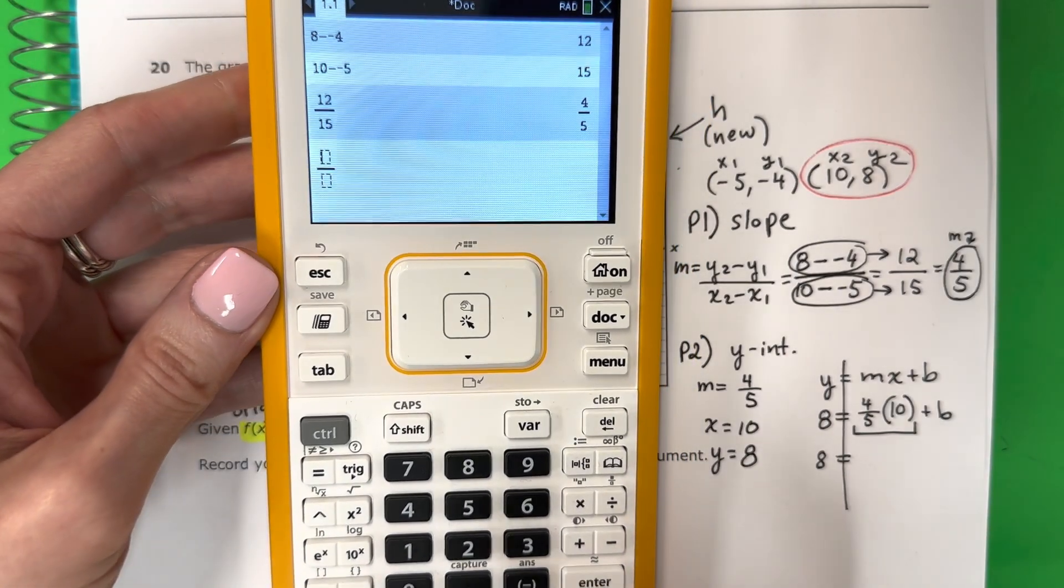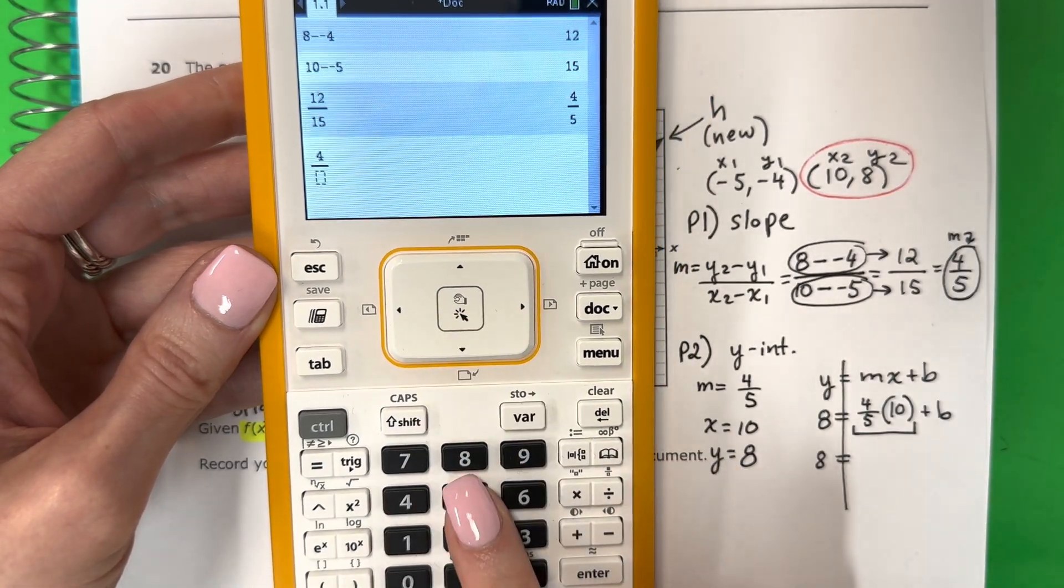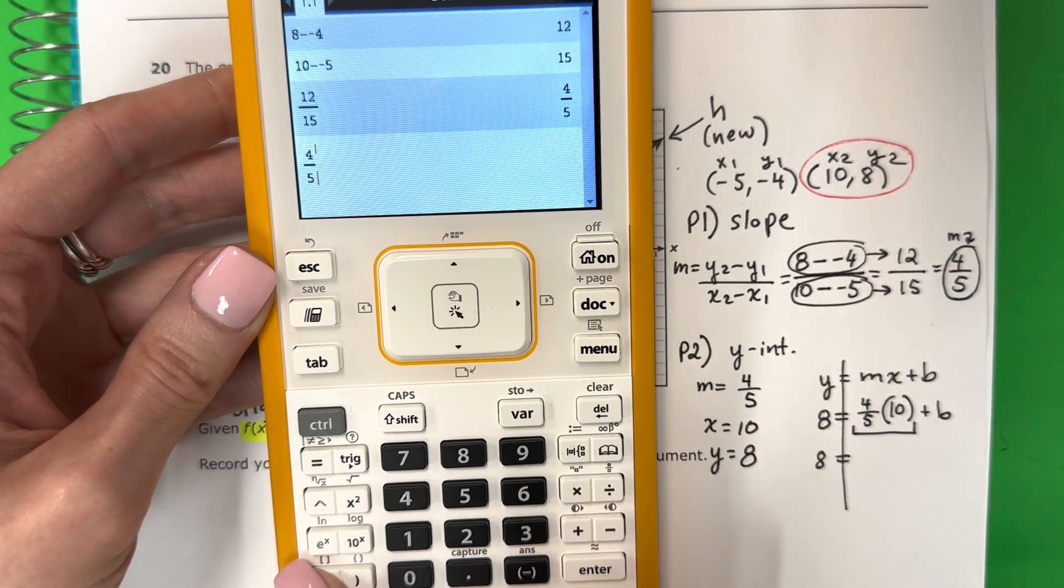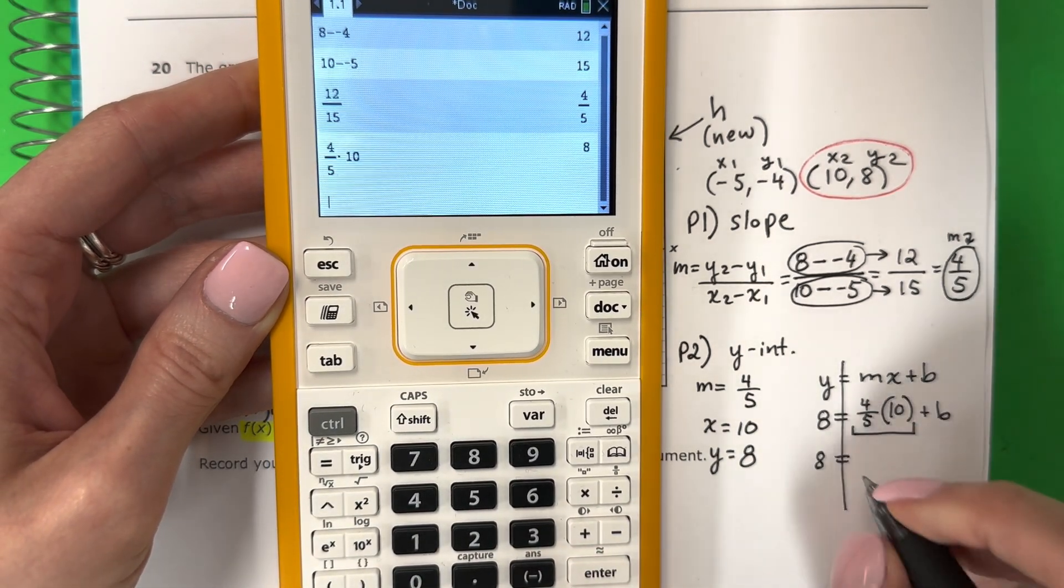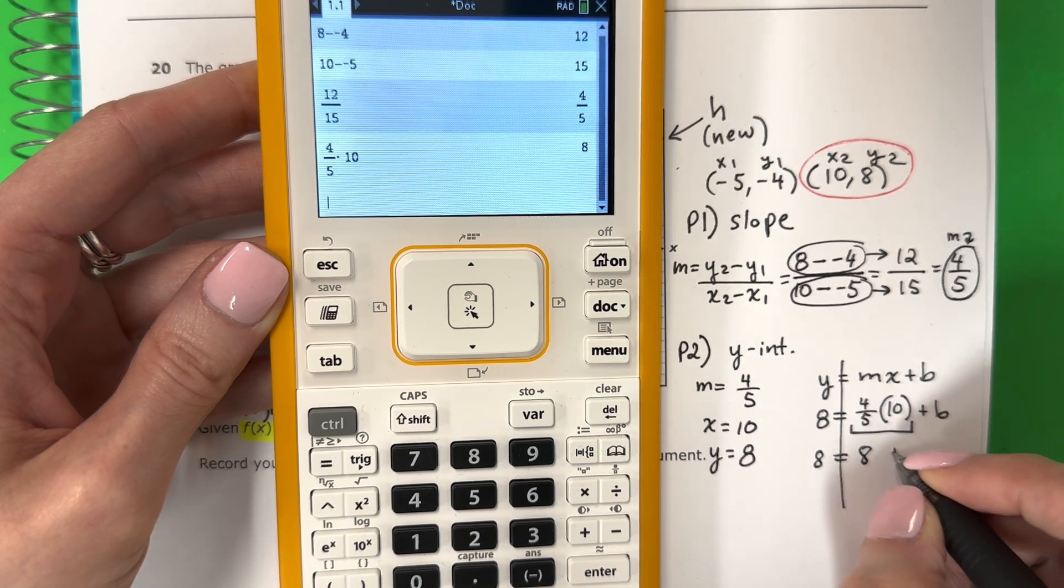Okay, so 4. Down. 5. Go to the right. Derecha. Parenthesis. 10. Parenthesis. Push enter. That is 8. Copy. Plus b.